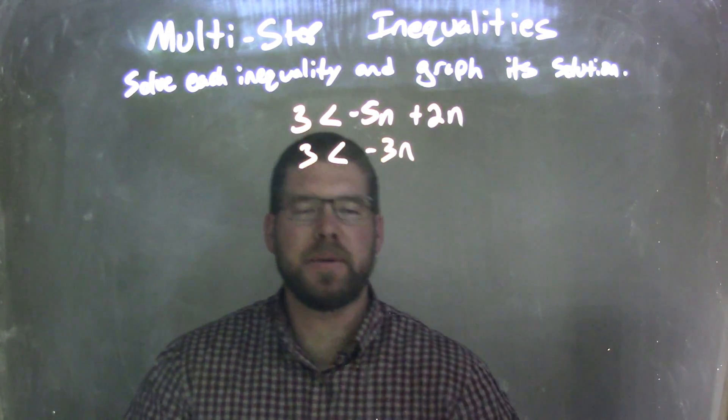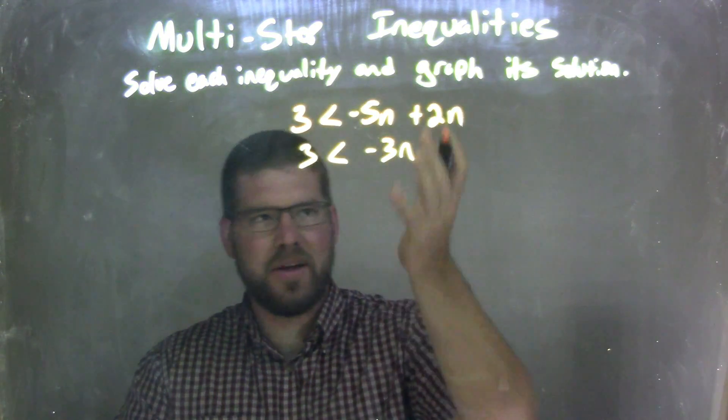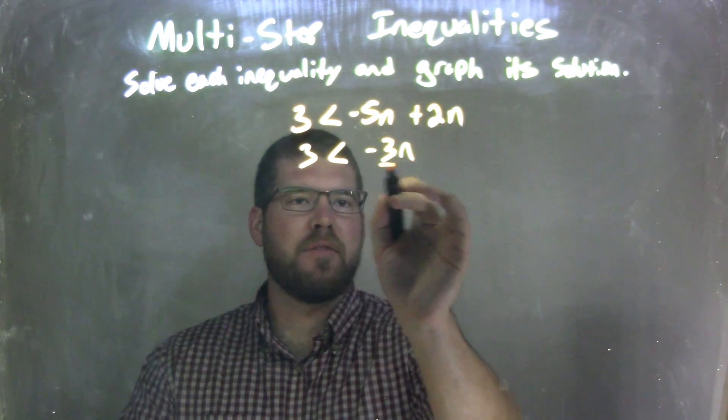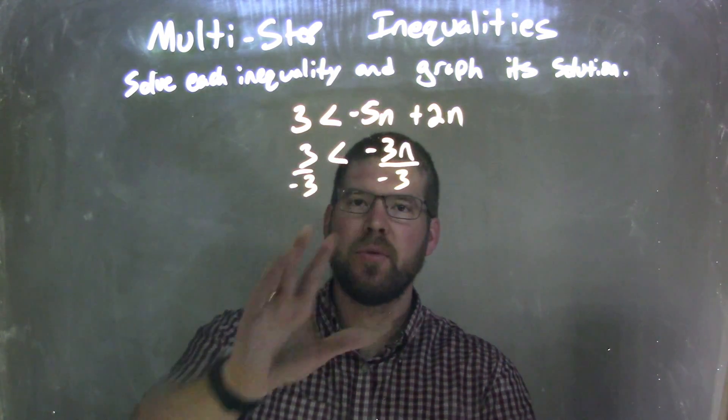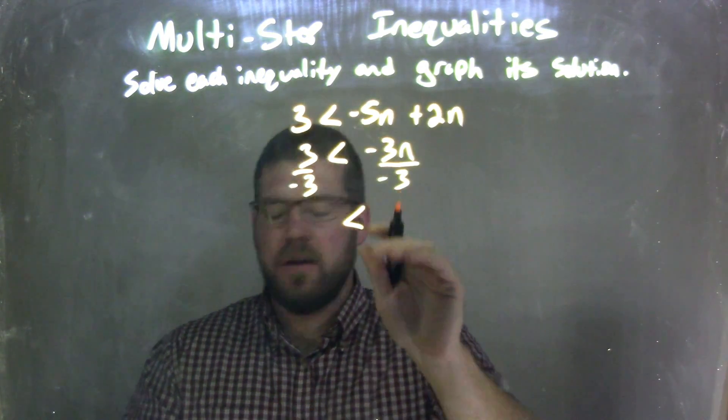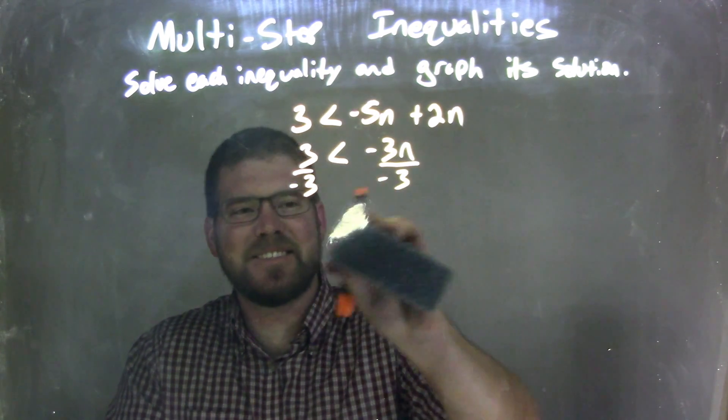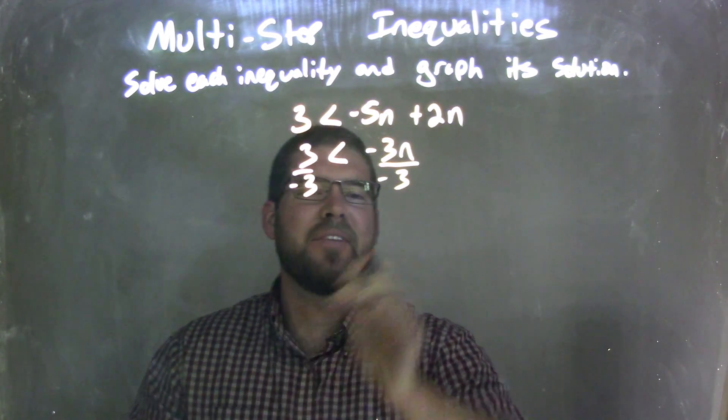And that's equal to my 3, or 3 is less than negative 3n. I then have to divide by negative 3 to both sides. What that does, when you divide by negative 3 to both sides, it doesn't give you less than a sign.